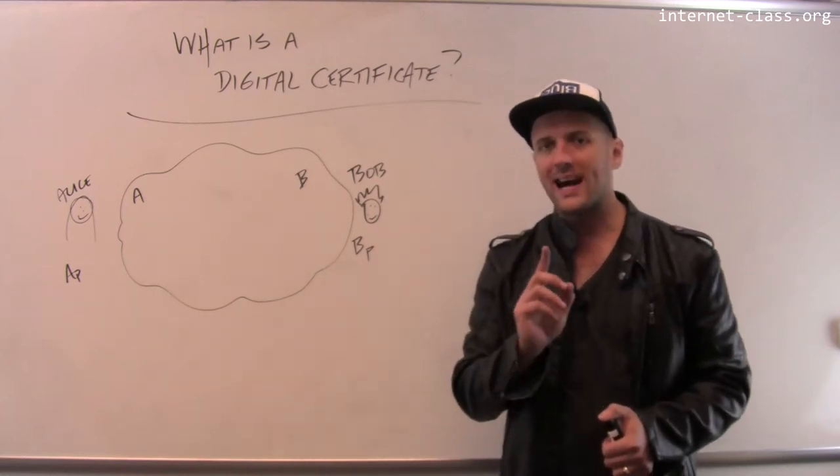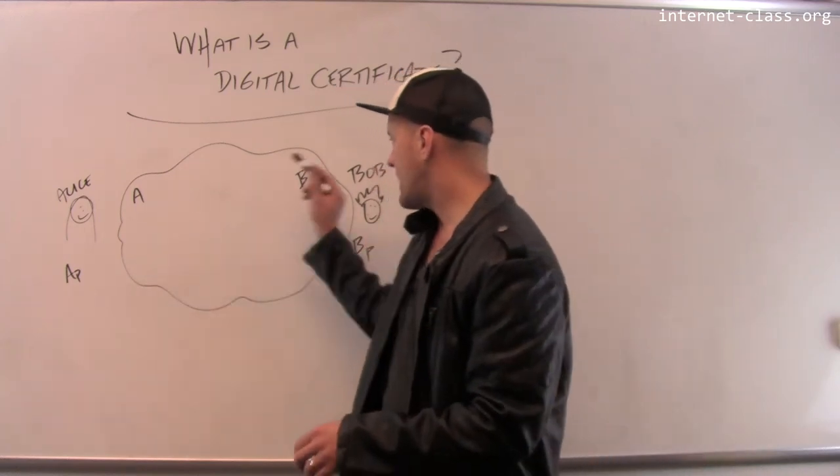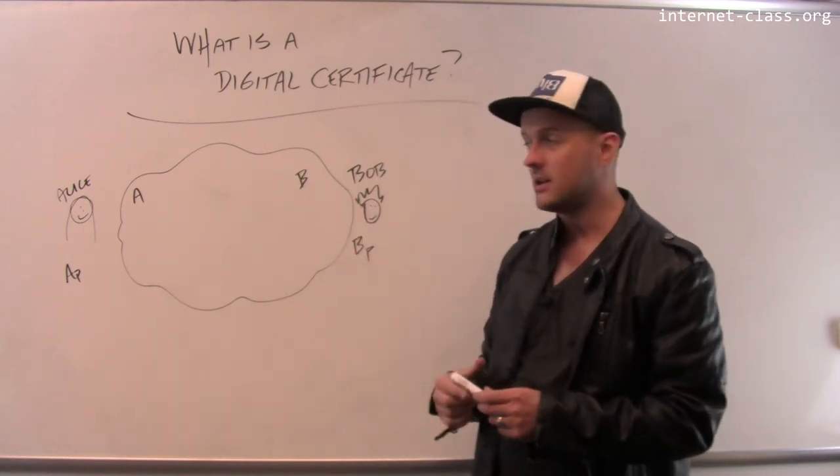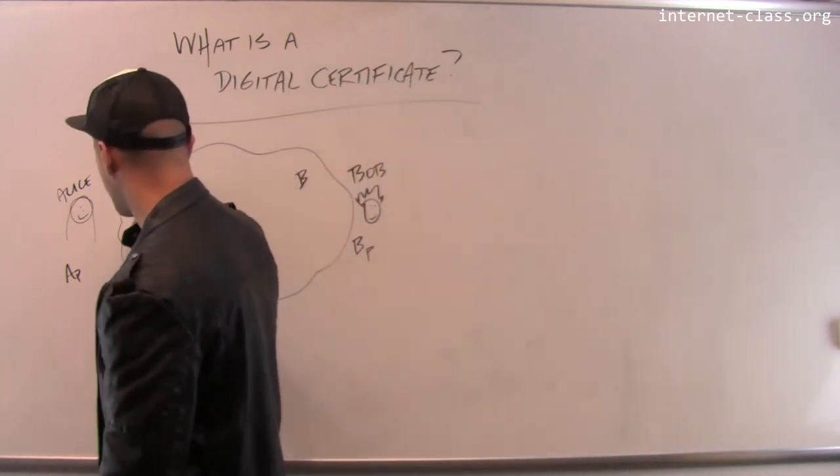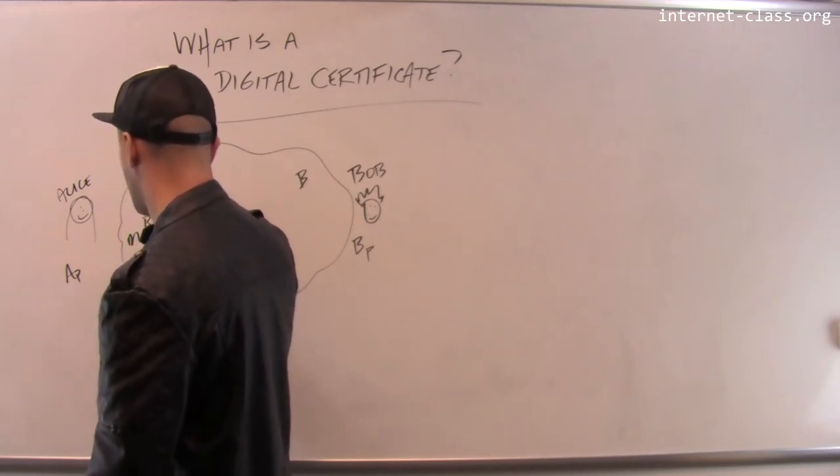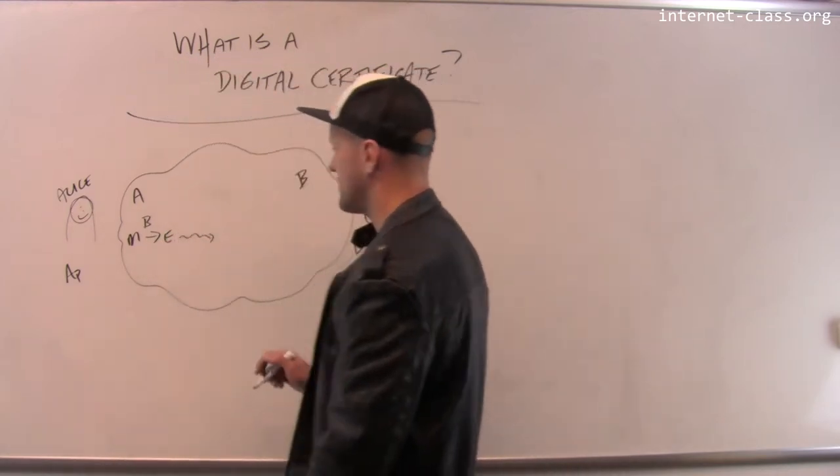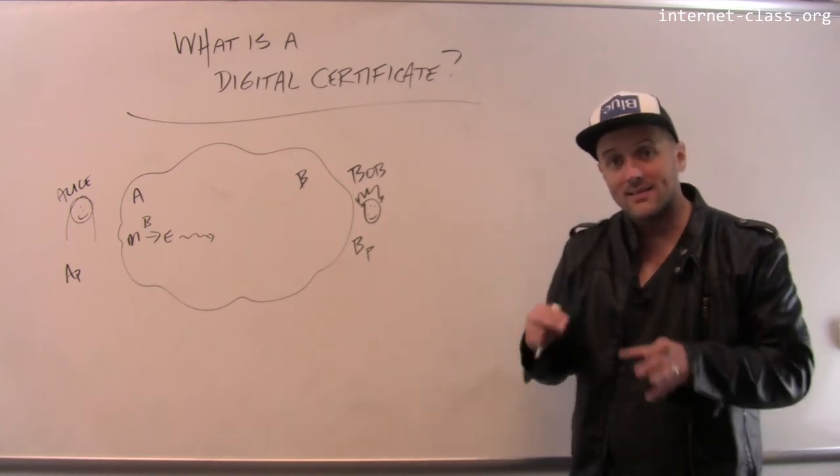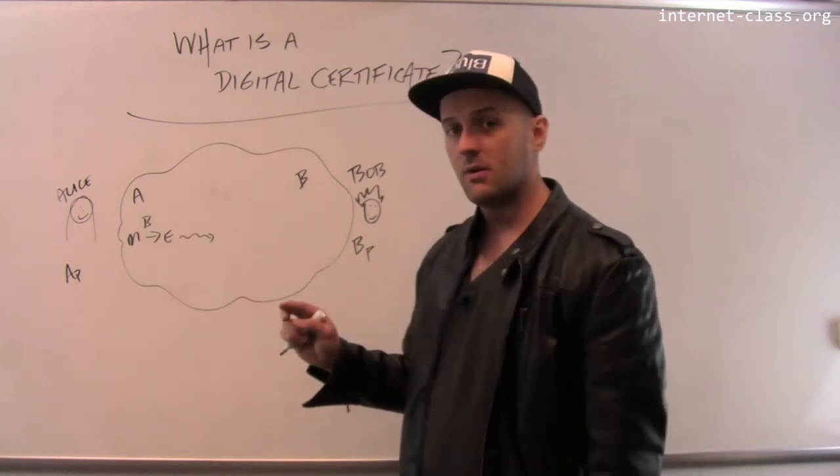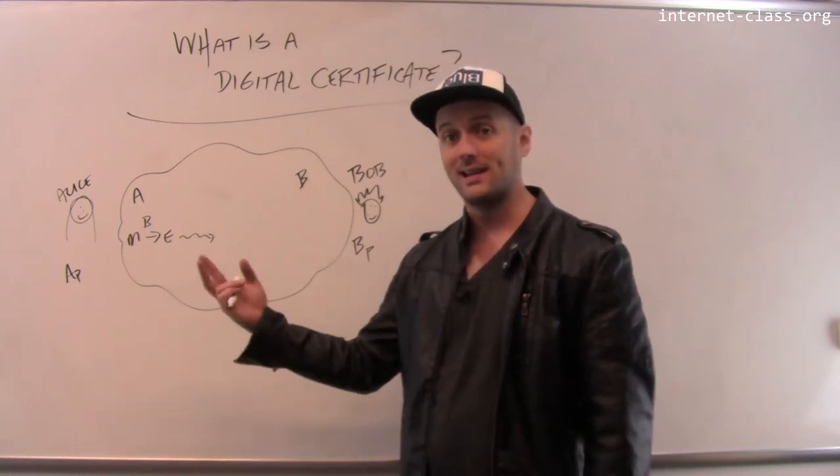However, there's another kind of attack that we haven't considered yet. Let's say that Alice is sending a message to Bob, and we're going to use Bob's public key to do this. Alice takes her message and she takes the plain text and creates the cipher text, the encrypted message using Bob's public key. Then she starts to transmit that message out across the internet. But let's say there's a malicious party in the middle, and that malicious party wants to fool Bob into thinking that he received some message from Alice that he didn't actually receive.